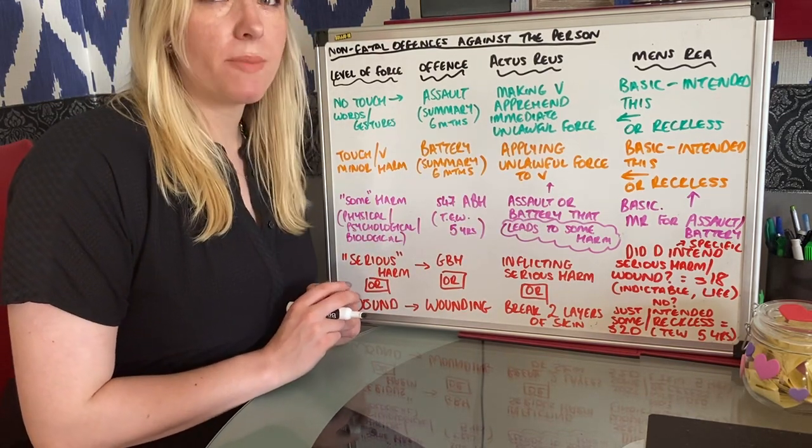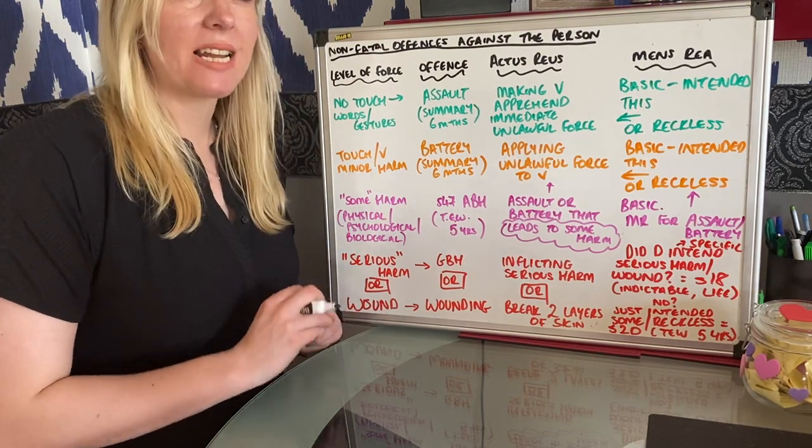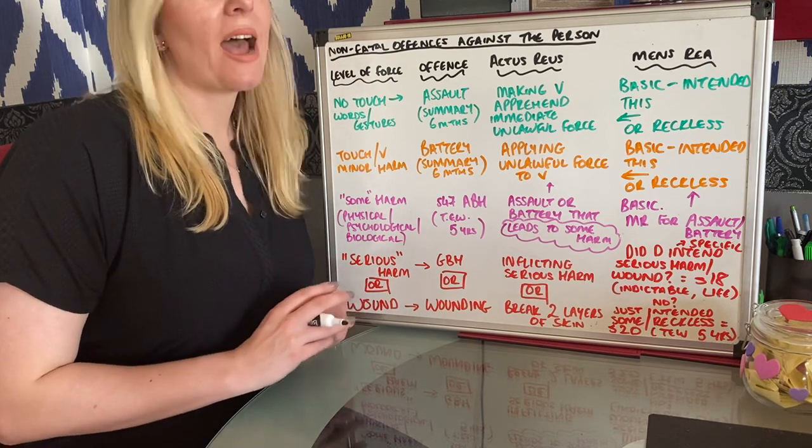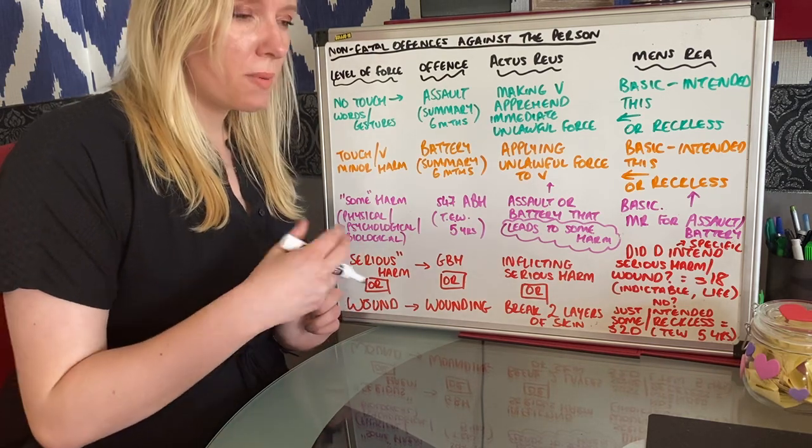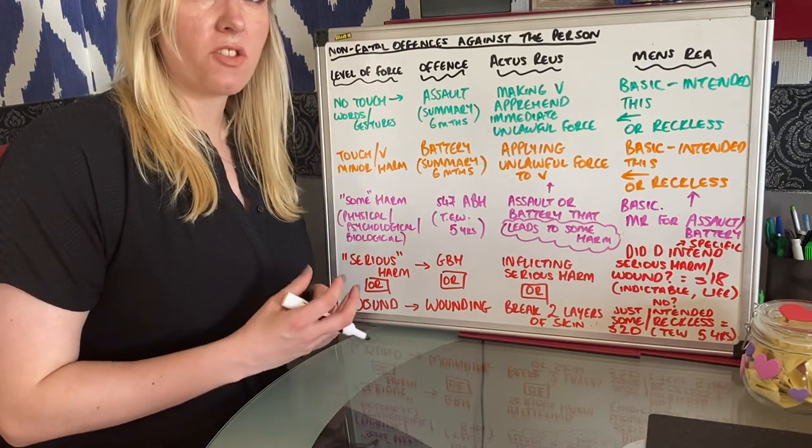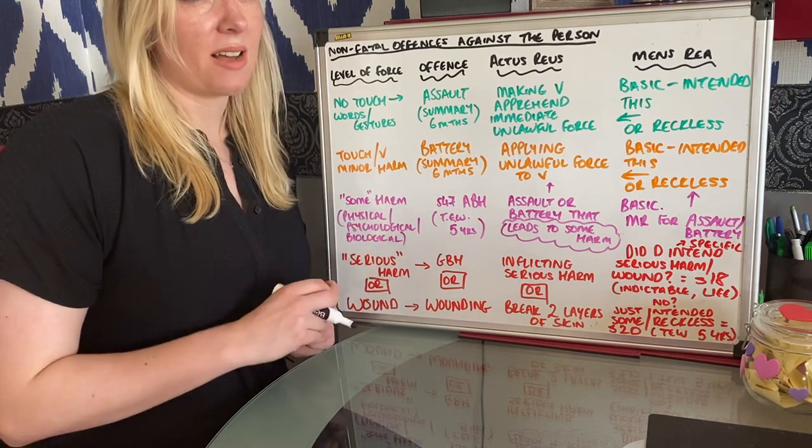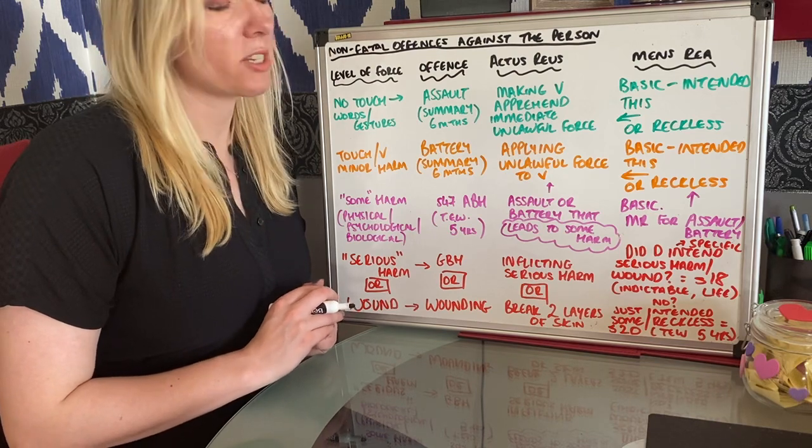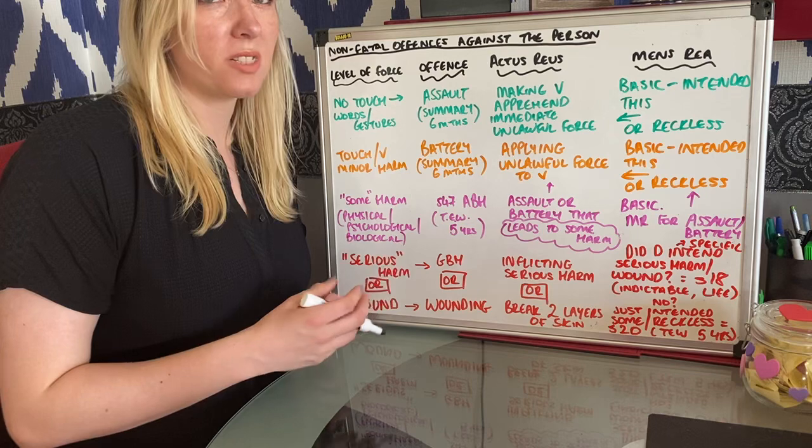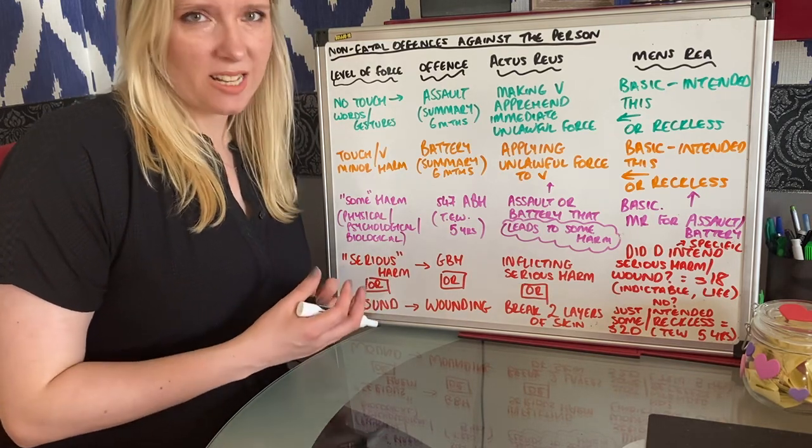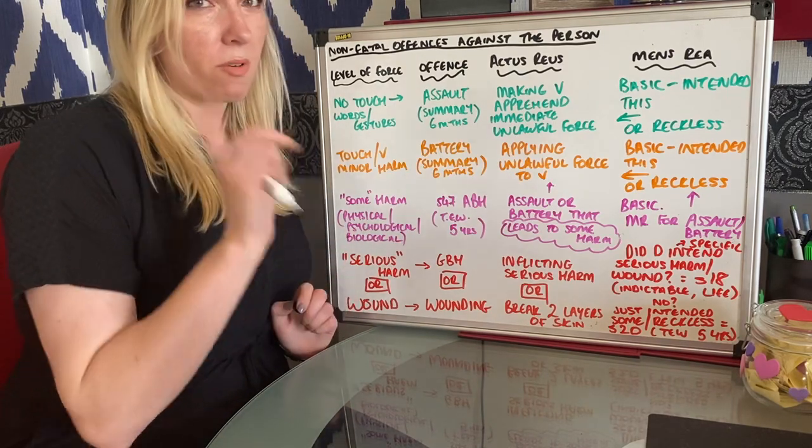The actus reus, put very simply, is doing something, an act or an omission, which makes the victim apprehend immediate unlawful force. So apprehend just means expect. I don't really like using the word fear because fear implies they're scared. You don't have to be scared. If someone tries to lick you, you might not be scared, for example, or if they threaten to kiss you, you may not be scared, but you may be expecting force that's not okay. It has to be an immediate threat, and remember that is very much based on the circumstances. So in the case of Smith v Walking, the fact that he was outside the door was immediate enough. And they have to be making you expect unlawful force.